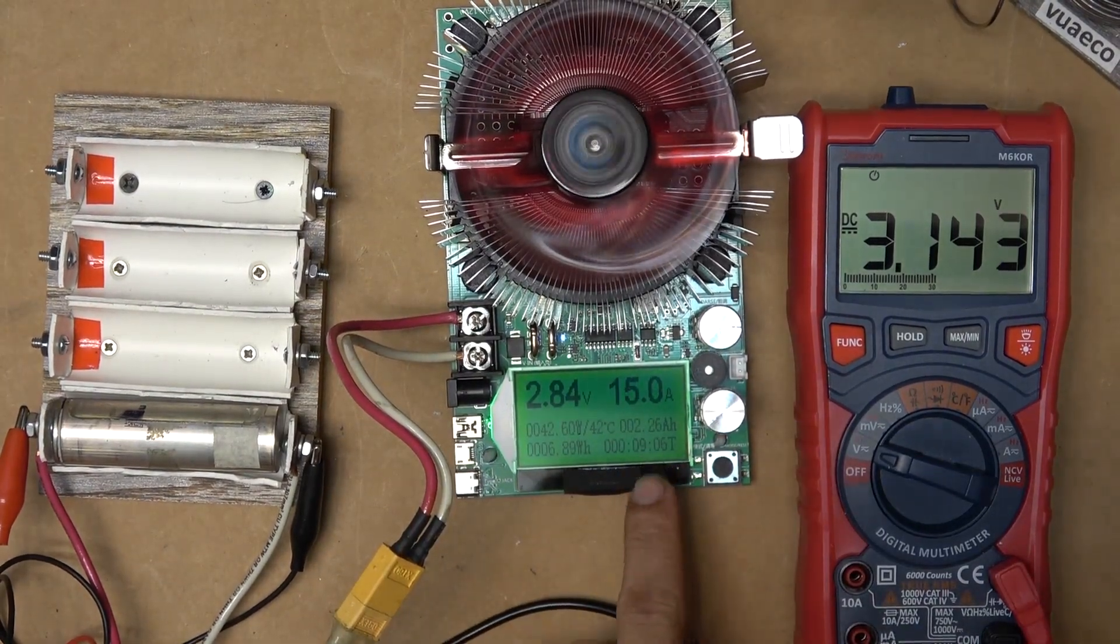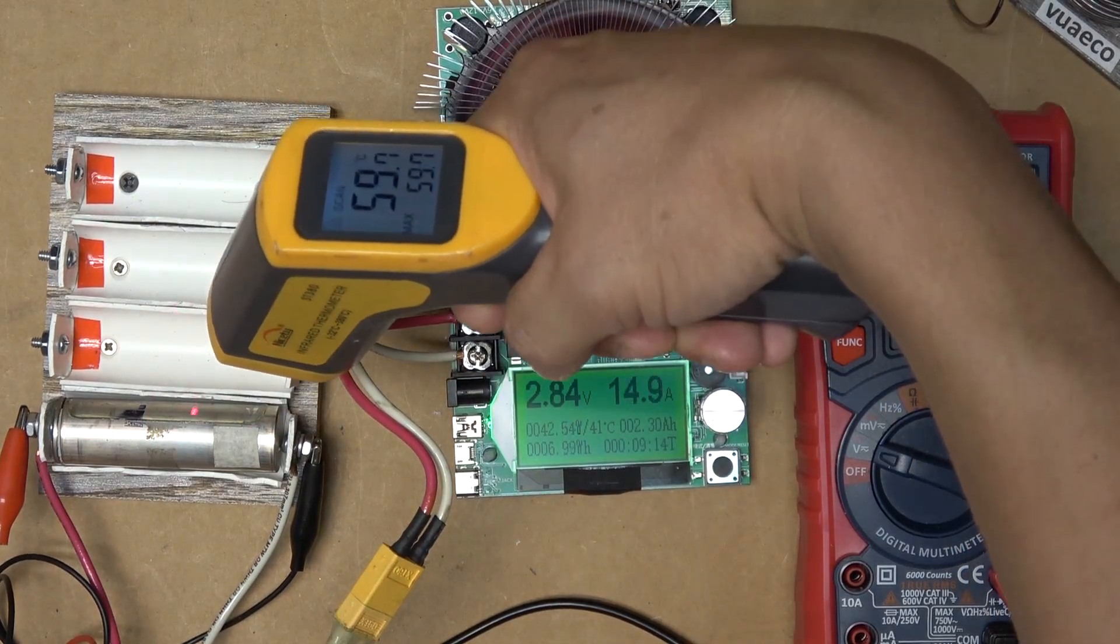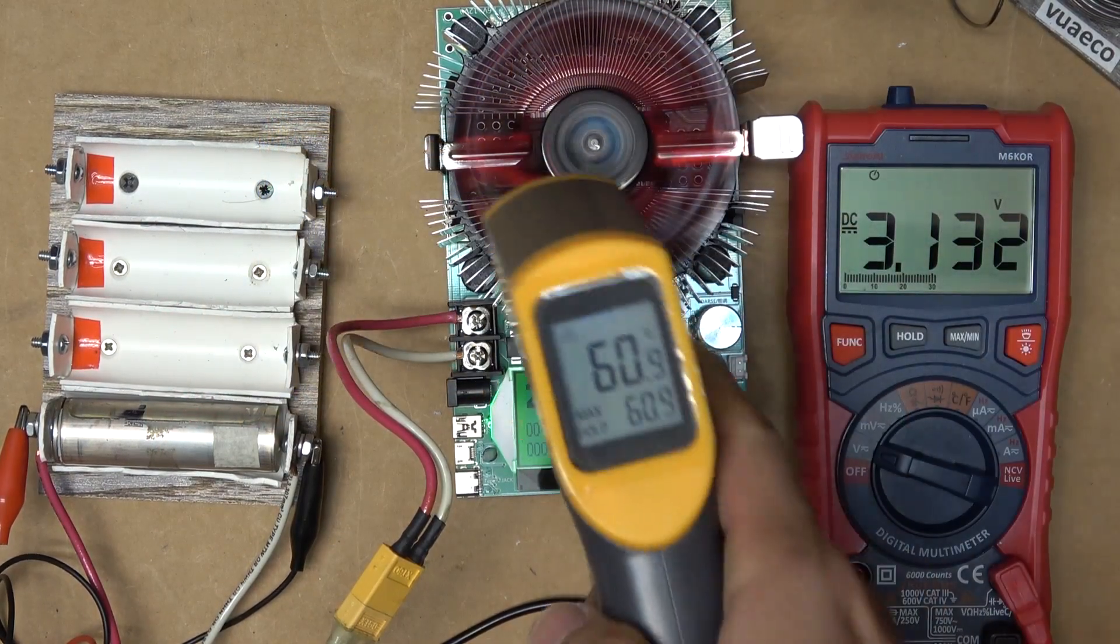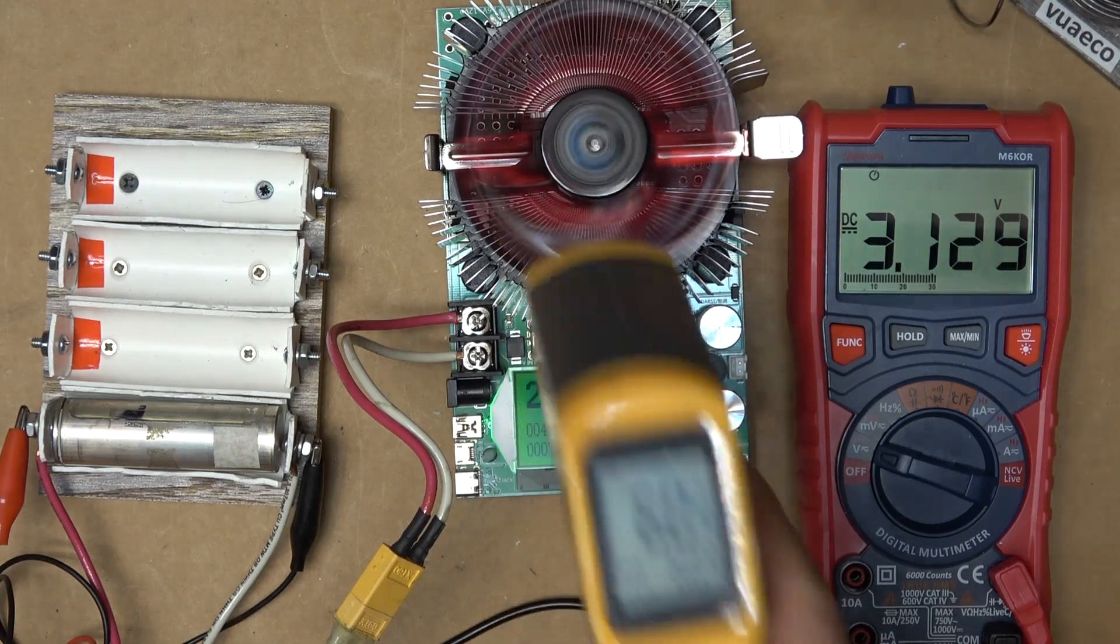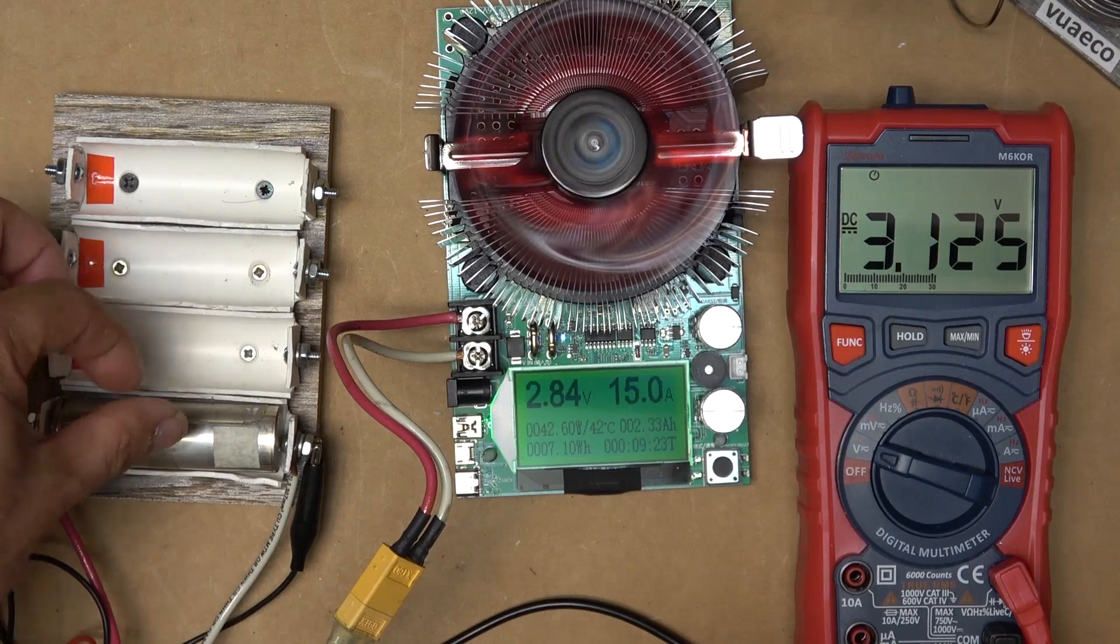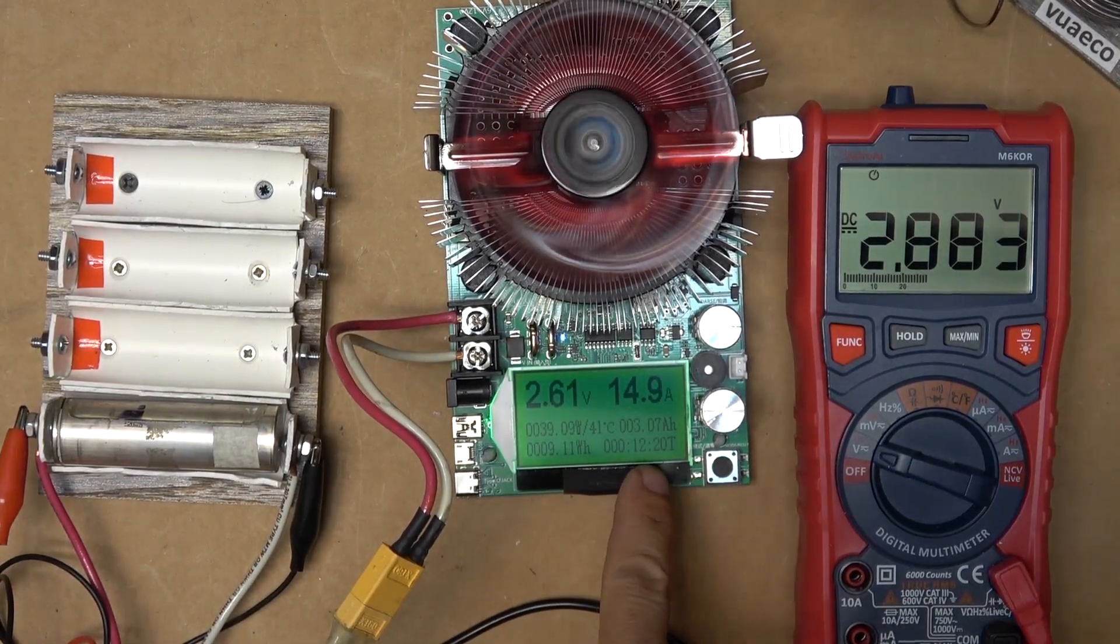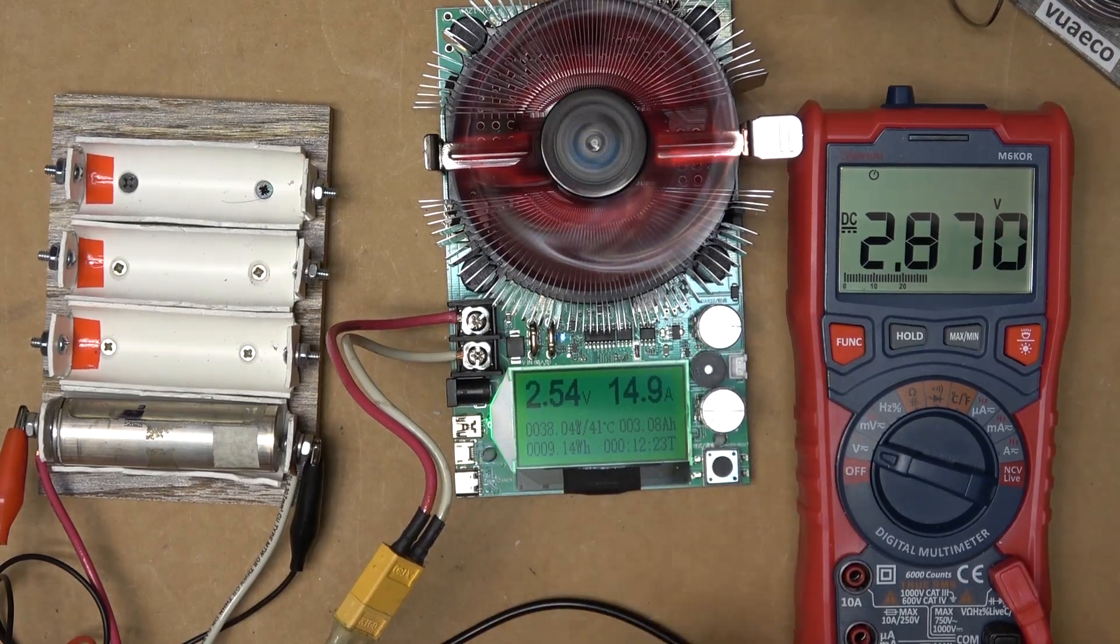We're about 9 minutes in and 59, 60 degrees Celsius. That's hot. I can't even touch it. We're at about 12 minutes mark, a little bit over halfway. And 2.8 volts already.